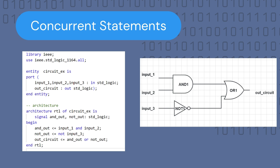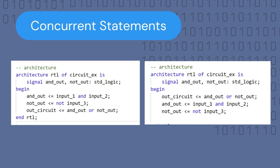To write the final output, we OR and_out and not_out to the output port out_circuit. We can write these three concurrent statements in any order and they will execute in the same manner, because VHDL is a parallel type of programming language — meaning all statements will be executed concurrently. This is an important concept to understand when writing and designing circuits with VHDL.